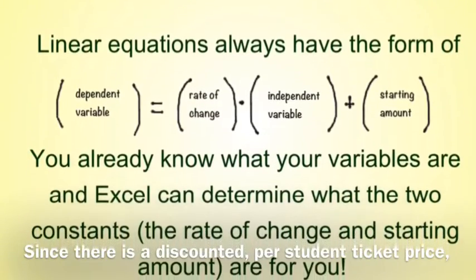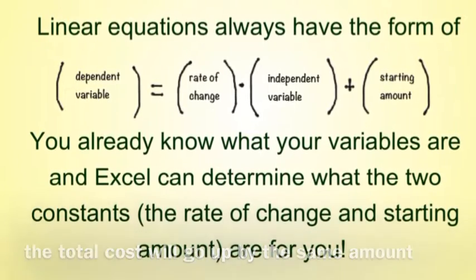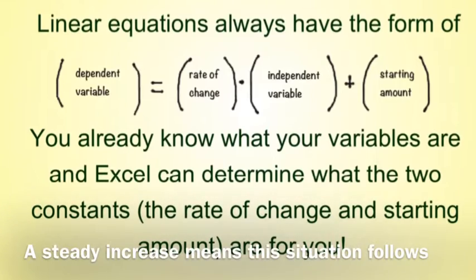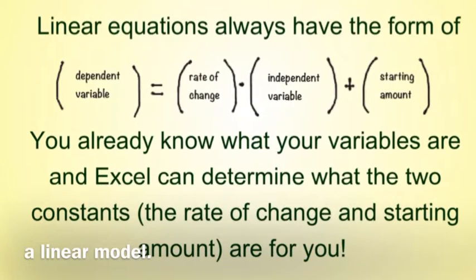Since there is a discounted per student ticket price, the total cost will go up by the same amount for each additional student. A steady increase means the situation follows a linear model.